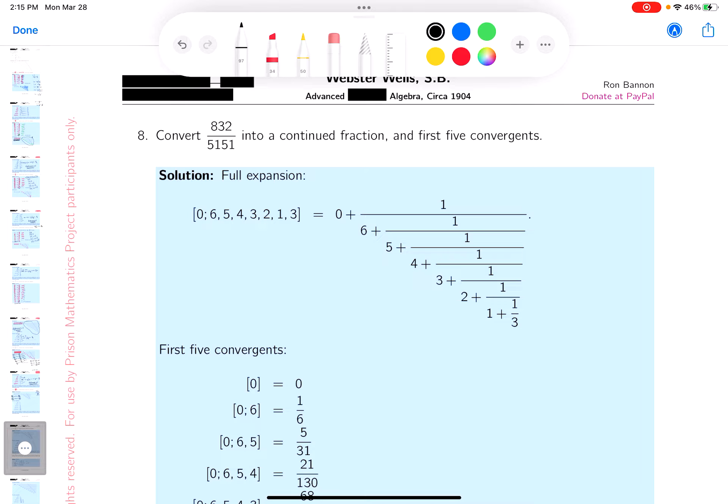Again, a proper fraction, starting it off relatively simple: 832/5151 equals 0 plus 832 over 5151.